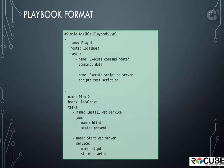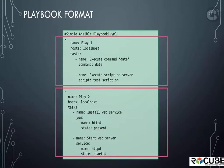Let's look at this sample playbook format and try to relate it to what we learned in the YAML section earlier. I've made a minor change and split the list of tasks into two separate plays. The YAML file, which is our playbook, contains a list of two plays, noted by the dash. Each play is a dictionary and has a set of properties called name, host, and tasks.